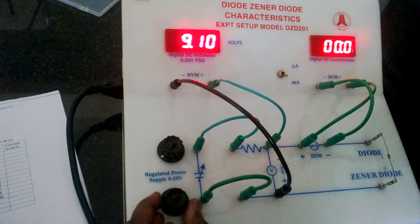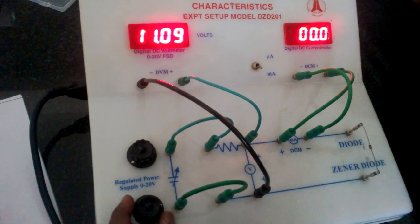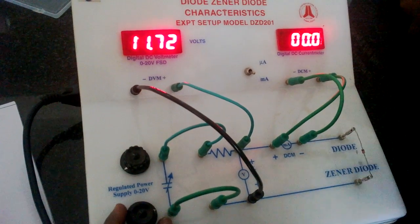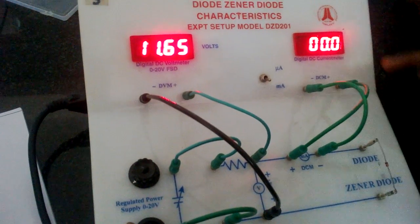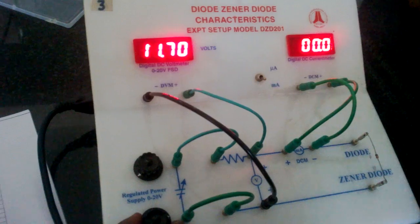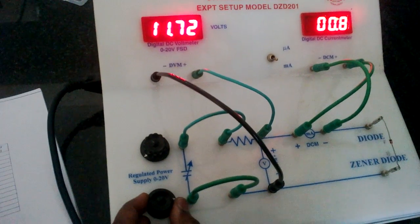Seven volts, eight, nine, ten, eleven. So, till 11.65 we are not getting any current. And 11.7 also, we are not getting current.